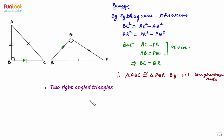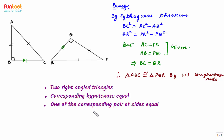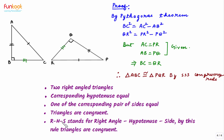Let's summarize what we have done. We had two right-angled triangles where the two corresponding hypotenuses were equal and one of the corresponding pairs of sides was equal. We proved the two triangles as congruent by RHS rule of congruency. In RHS rule, R stands for right-angle, H stands for hypotenuse, and S stands for side.